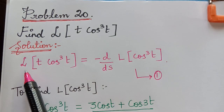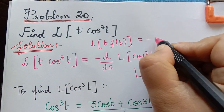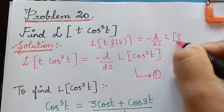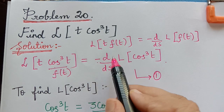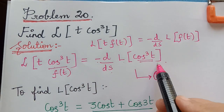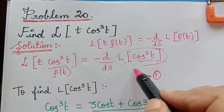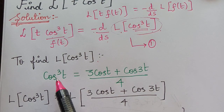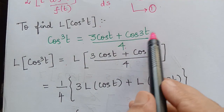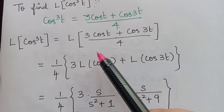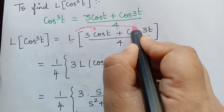By using the theorem: L{t·f(t)} = −d/ds of L{f(t)}, we have L{t·cos³t} = −d/ds of L{cos³t}. We mark this as equation 1. First we find L{cos³t} using the trigonometric identity: cos³t = (3cost + cos3t) / 4. So L{cos³t} = L{(3cost + cos3t)/4}. By the linearity and scalar properties, taking 1/4 outside, we get 1/4 · [3·L{cost} + L{cos3t}].